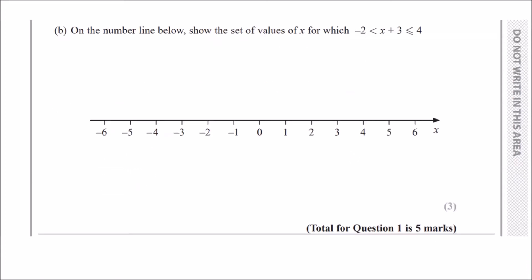For part b, we've got a number line showing the set of values of x for which x plus 3 is between minus 2 and 4. For this problem, we just isolate x by getting rid of that plus 3. Subtract 3 on both sides. Subtracting 3 on both sides, you should get minus 5 on one side and 1 on the other.